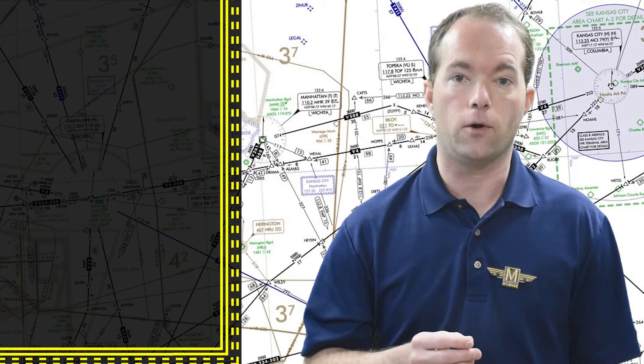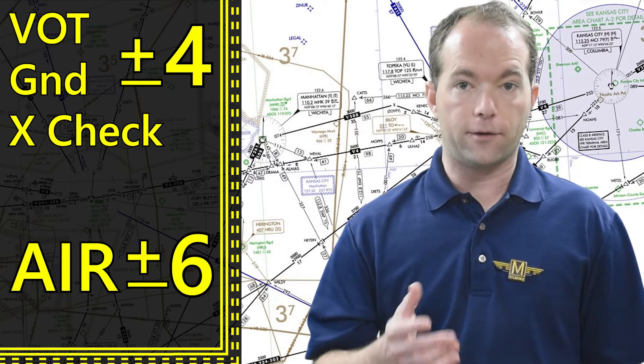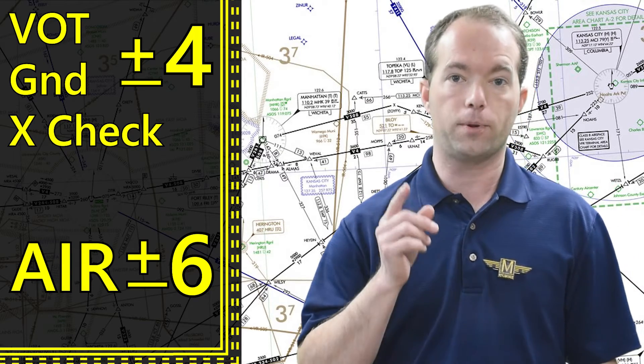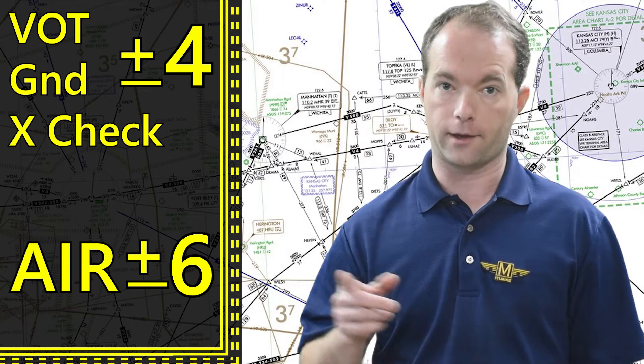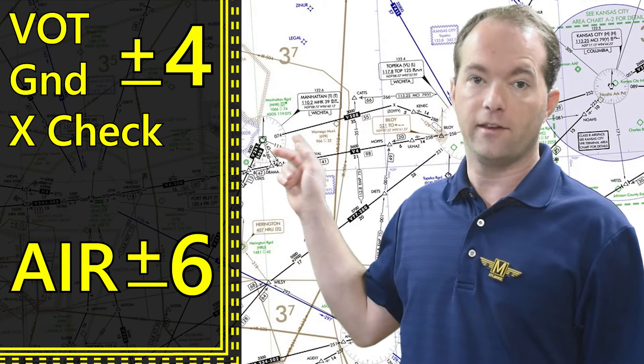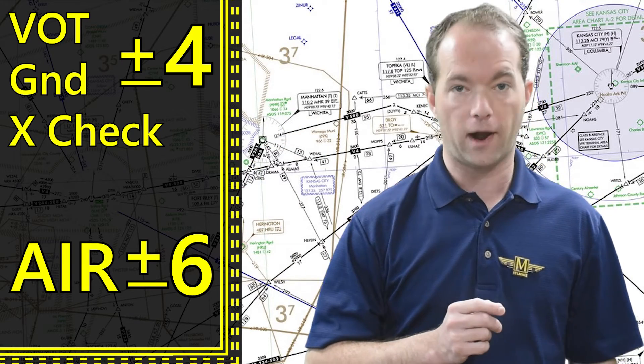Now here's the deal you must know. You can have plus or minus 4 degrees if it's a ground check, or plus or minus 6 degrees if it's an airborne check. If the test exceeds these limits, then you can't use your VOR for IFR flight.